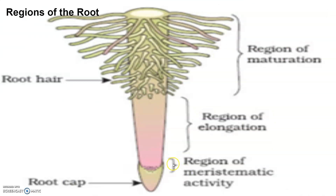Regions of the root. The root is covered at the apex by a thimble-like structure called the root cap, which protects the tender apex of the root as it makes its way through the soil. A few millimeters above the root cap is the region of meristematic activity. The cells of this region are very small, thin-walled, and have dense protoplasm. They divide repeatedly and undergo rapid elongation and enlargement, responsible for growth of the root in length. This region is called the region of elongation.